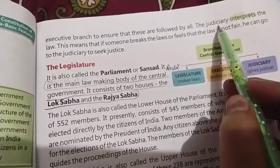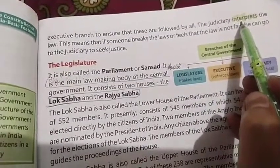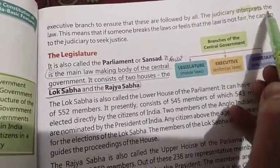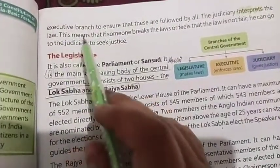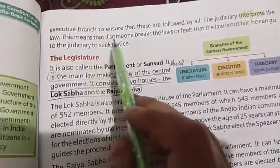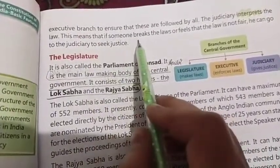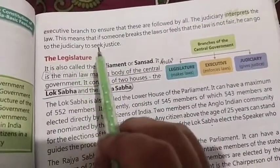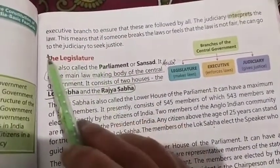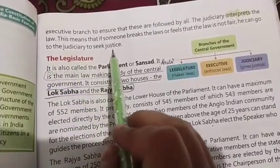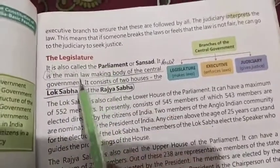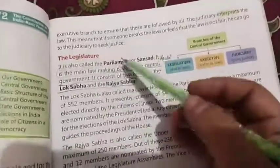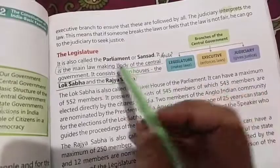Then comes the judiciary. The judiciary interprets — meaning it explains — the laws that are in the constitution. If someone breaks the laws, or feels that a law is not fair, they can go to the judiciary to seek justice.